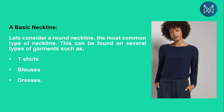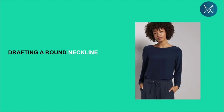Now let's consider a round neckline, which is the most common type of neckline. This can be found in several types of garments like t-shirts, blouses, dresses, etc. As you can see in that picture, the lady is wearing a shirt with a round neckline. Now how do we draft this round neckline? Like I mentioned, you always have to have your tech pack or your specifications and measurements ready.